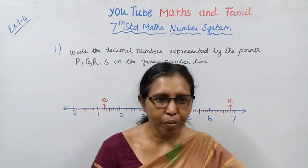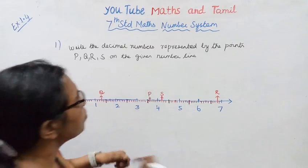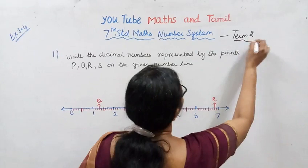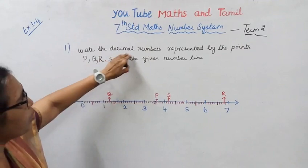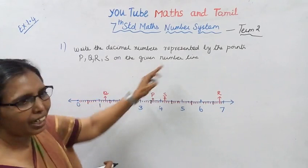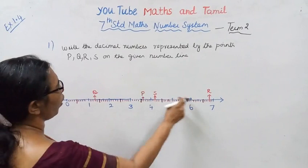Hello students, welcome to Maths and Tamil channel. 7th standard maths, number system, term 2, exercise 1.4. First, write the decimal numbers represented by the points P, Q, R, S on the given number line.